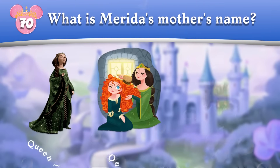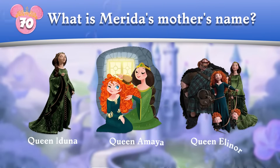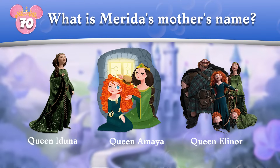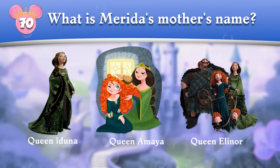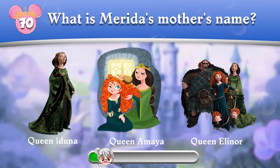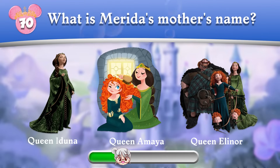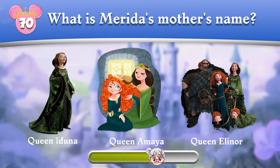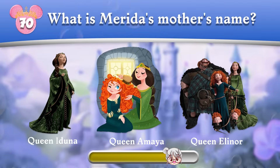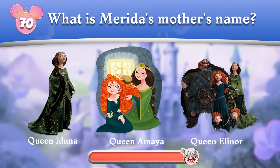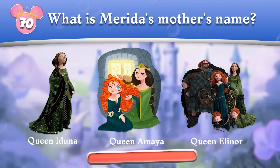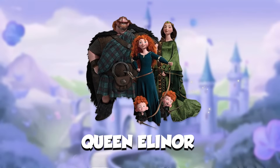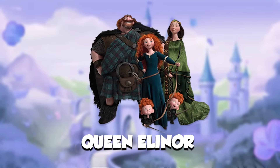Round 70: What is Merida's mother's name? Easy! Queen Eleanor.